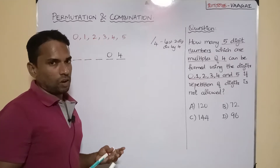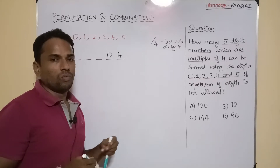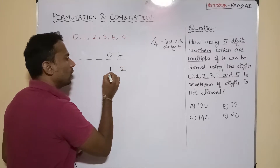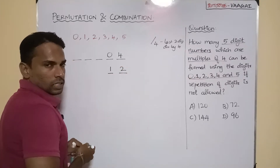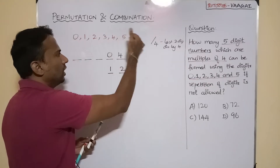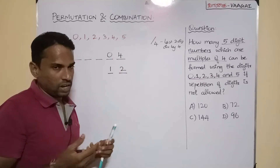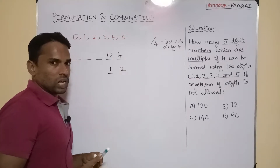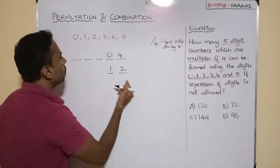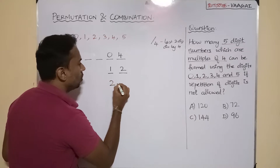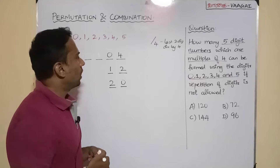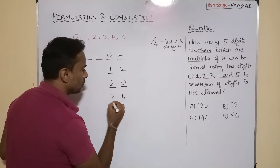4×2=8, but 8 is not in our digits, so that's not possible. 4×3=12, so the last two digits can be 1 and 2 — both available. 4×5=20, so we can have 2 and 0 — both available. 4×6=24, and we have digits 2 and 4, so 24 is also possible.